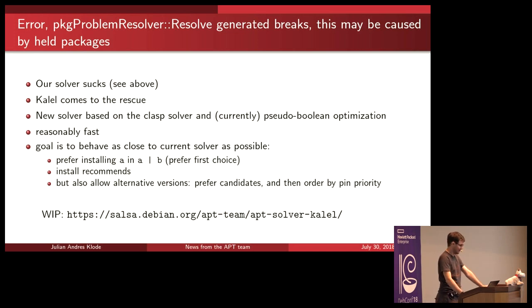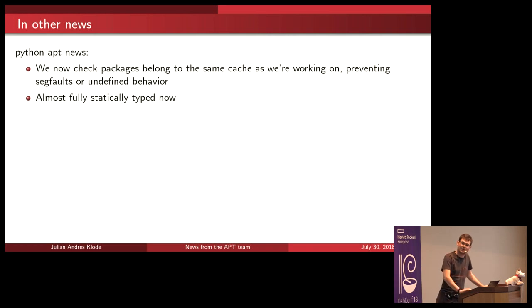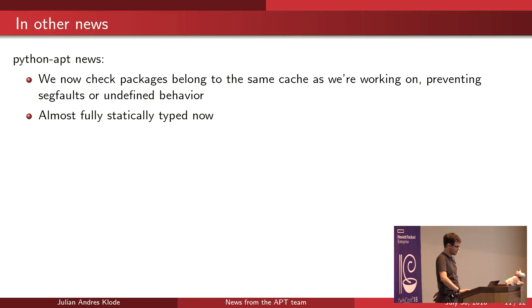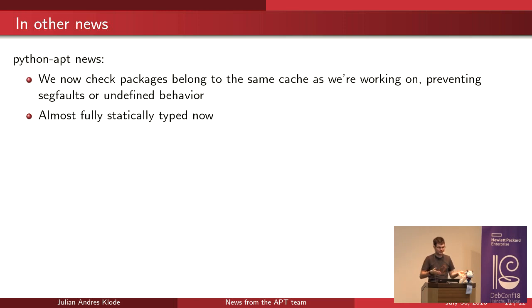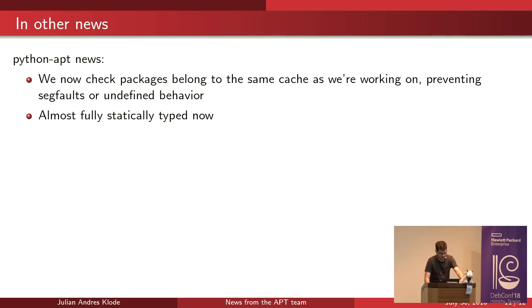And that's it for apt itself. In other news, Python apt now checks that packages belong to the same cache. Previously, if you did aptcache.mark_install(package) and had reopened the cache in between, it would just crash, do nothing, or behave unpredictably. Now we raise an exception if the cache is different, making the whole thing much safer. There's also a workaround for existing code in the high-level apt module which automatically remaps objects when reopening. We also now have fully static typing in the Python apt module, which found a few errors in the code.